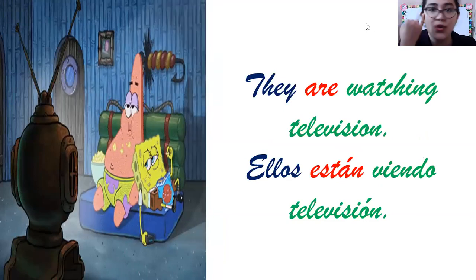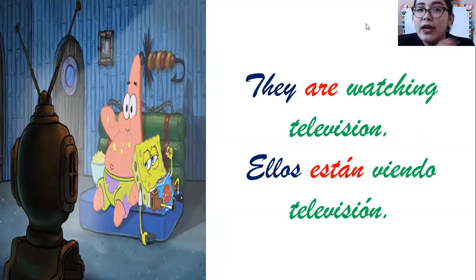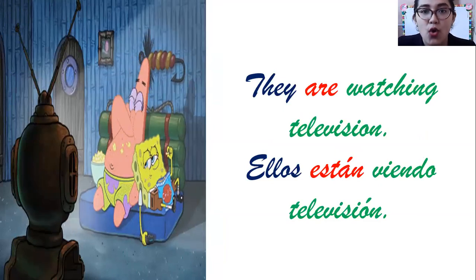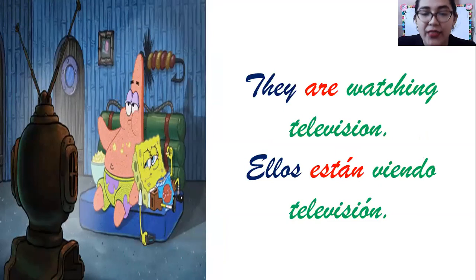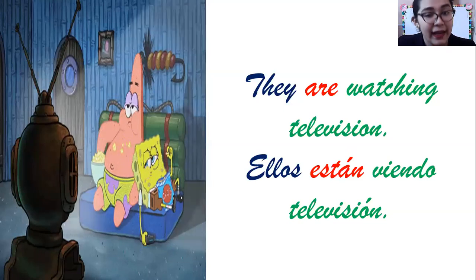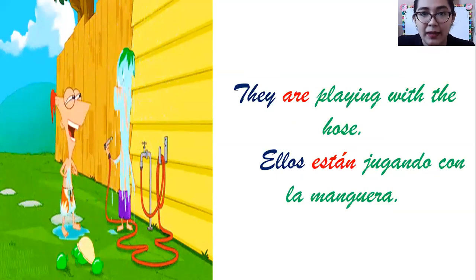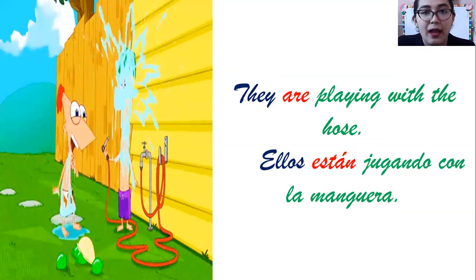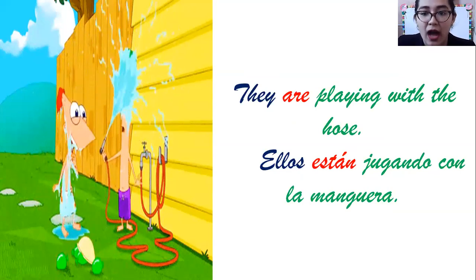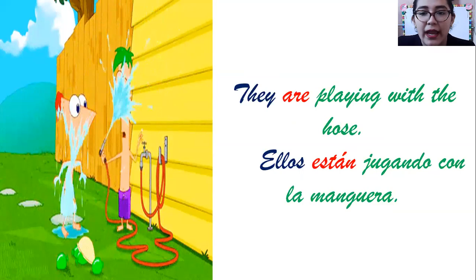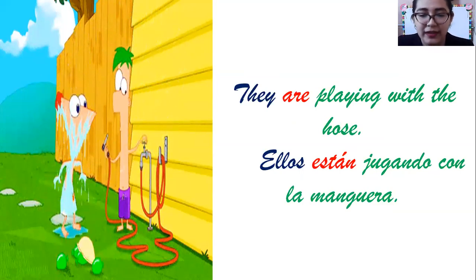And now, here come the sentences with 'they are.' ¿Qué significaba 'they are'? Ellos o ellas están. Plus the verb with '-ing.' Number three: They are watching television — ellos están viendo televisión. And finally, number four: They are playing with the hose — ellos están jugando con la manguera.